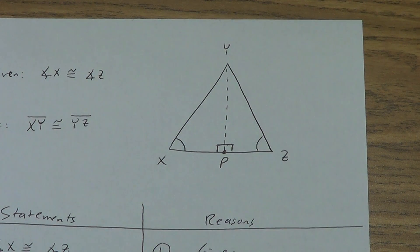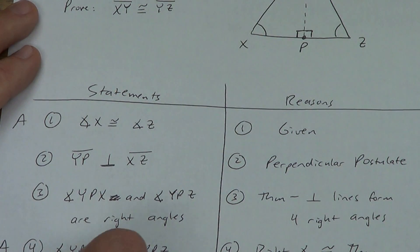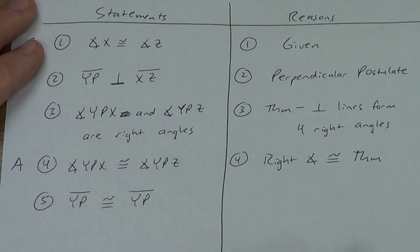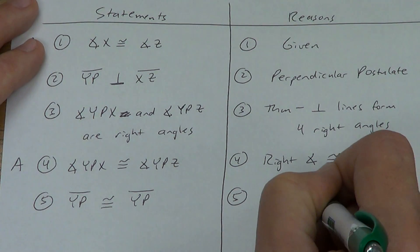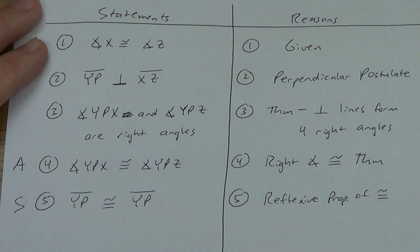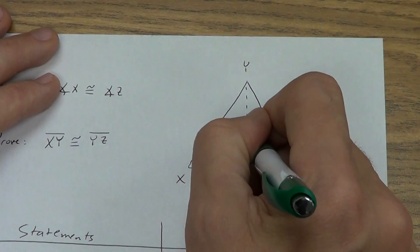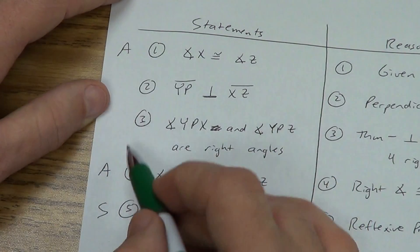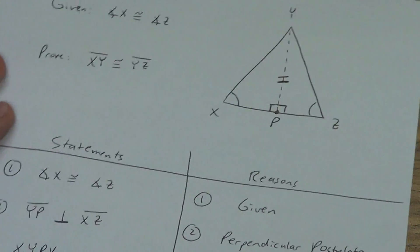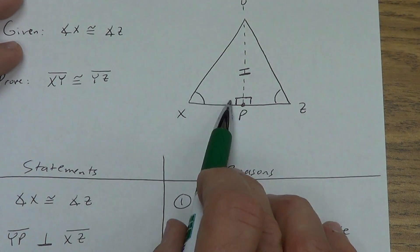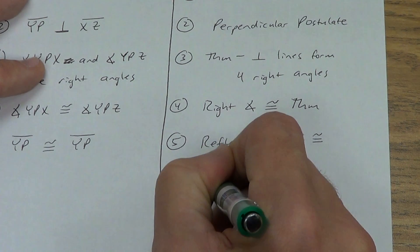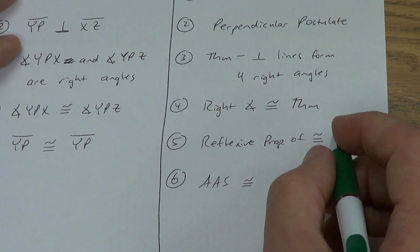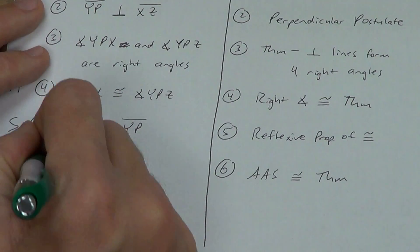The easiest side to get congruent is YP. So YP is congruent to YP by the reflexive property of congruence — that's my side. Now what's the order? The side YP is not between the two angles, so it's angle-angle-side, not angle-side-angle. AAS is a theorem. I need to name the triangles in the correct order, so triangle XPY is congruent to triangle ZPY by AAS.